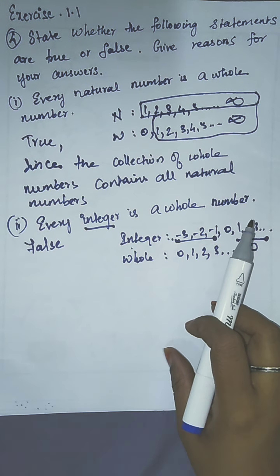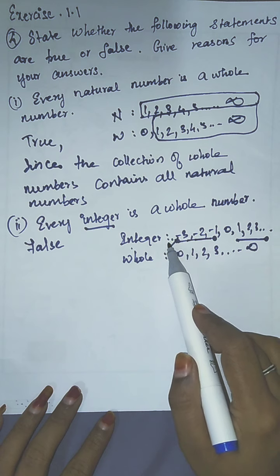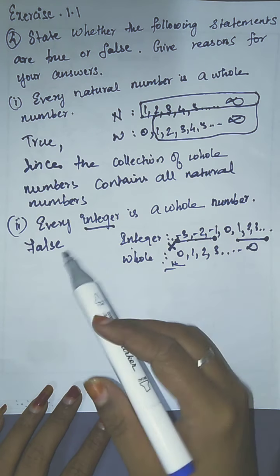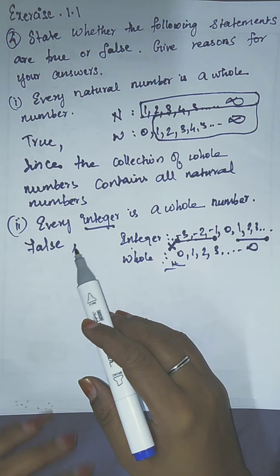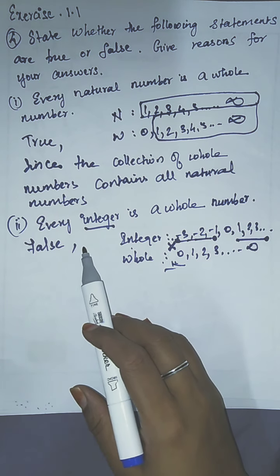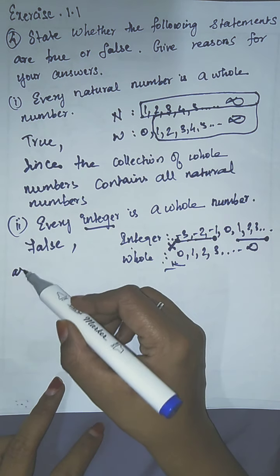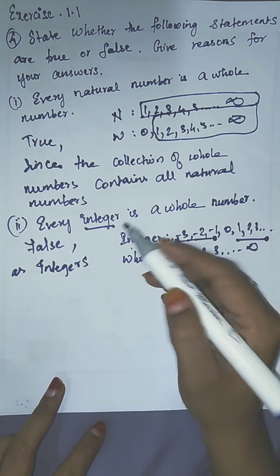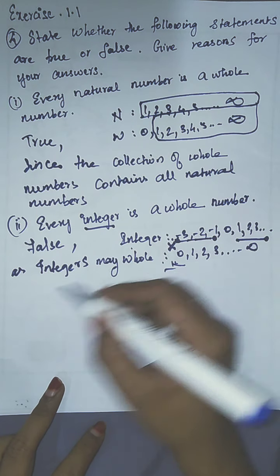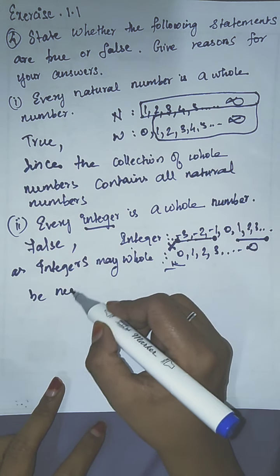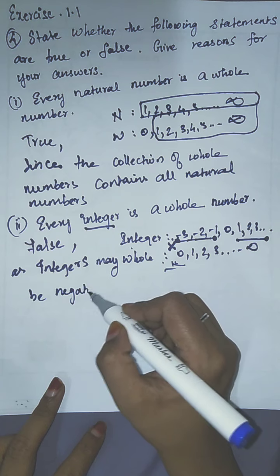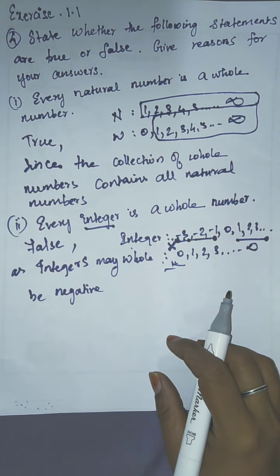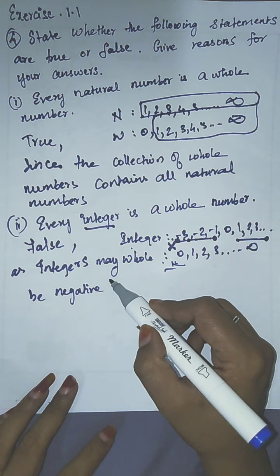So the statement 'every integer is a whole number' is wrong — it is false — because the negative values are not in the whole numbers. The reason is: integers may be negative, like minus 3, minus 2, minus 1, minus 4.